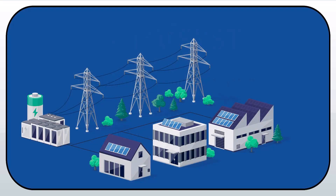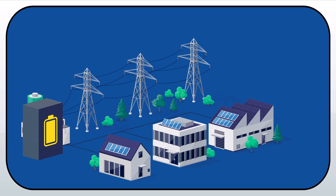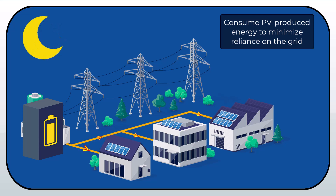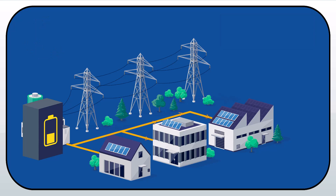Many grid-connected PV systems today are equipped with a Battery Energy Storage System, or BESS for short. The purpose of such a hybrid system can differ from case to case. It is customary to preferentially consume PV-produced energy to minimize reliance on the grid. With a storage system, excess energy can be stored and used during the night, and surplus energy from the PV generators can be injected into the grid.